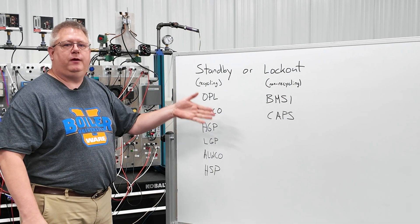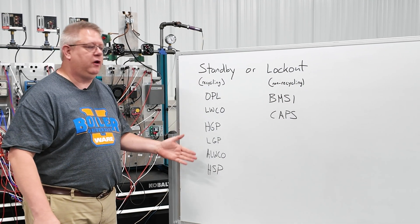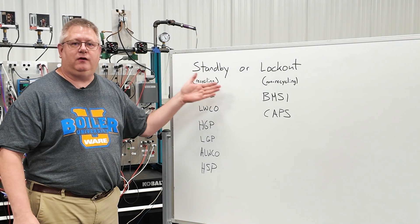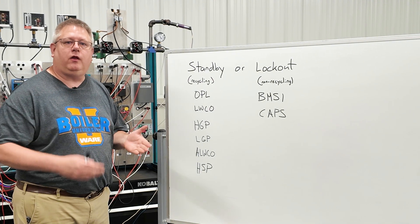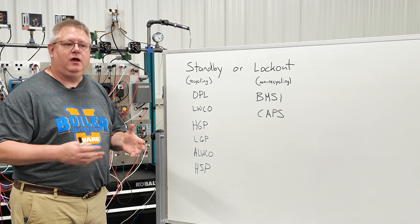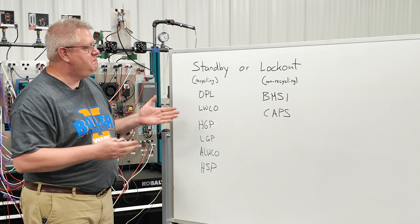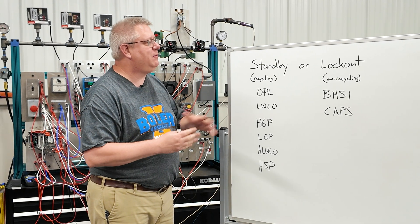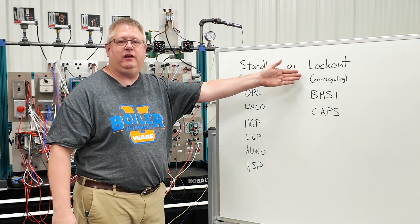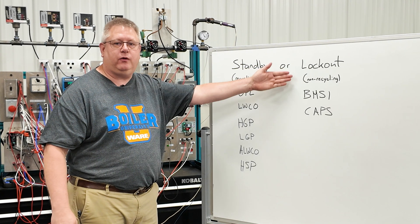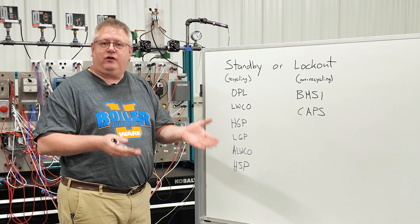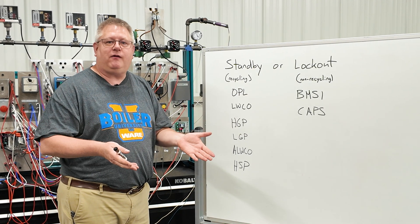Now that we've tripped all the limits on the board, we basically have a list of what switches are in each interlock circuit. We've definitely minimized what we need to check for getting a running interlock fault. Not as good as having a diagram, but better than having nothing.